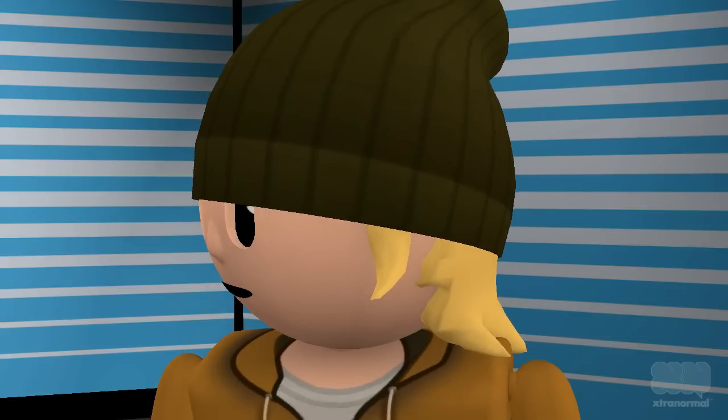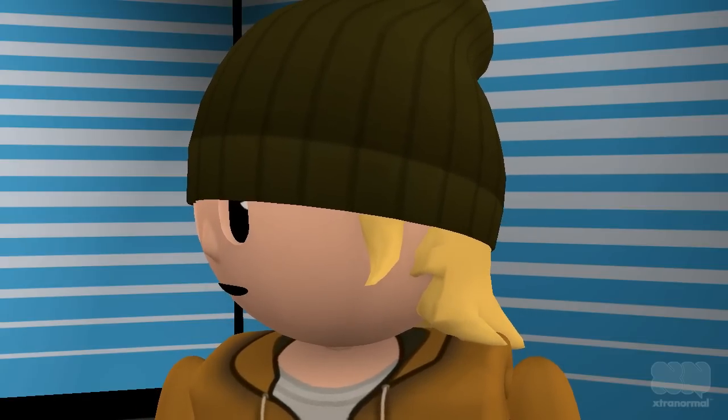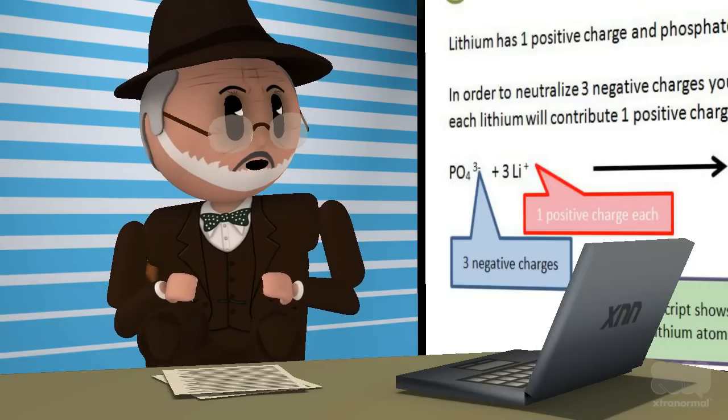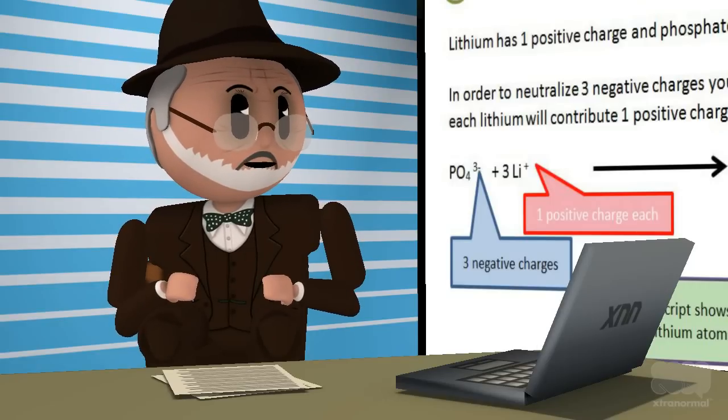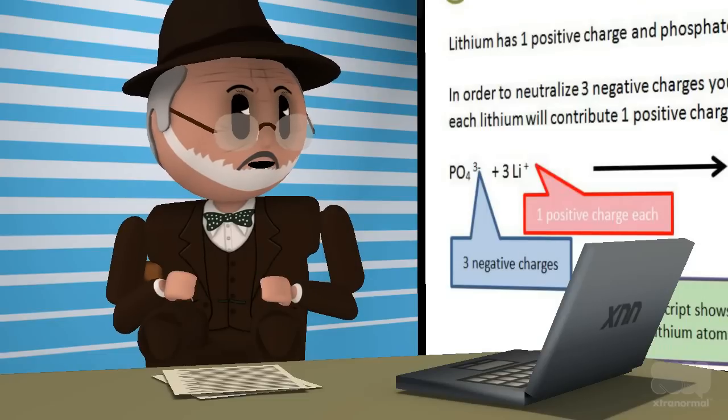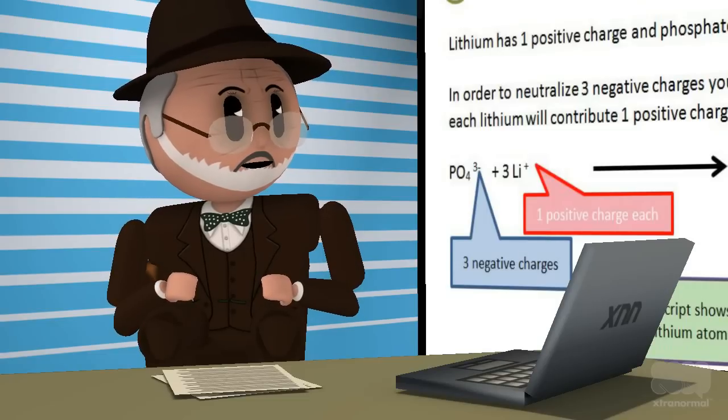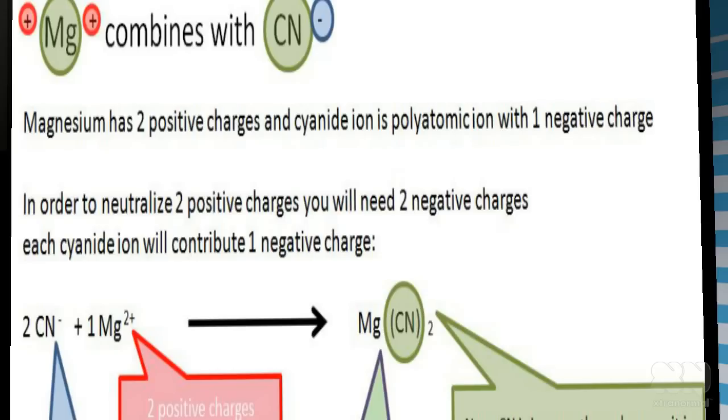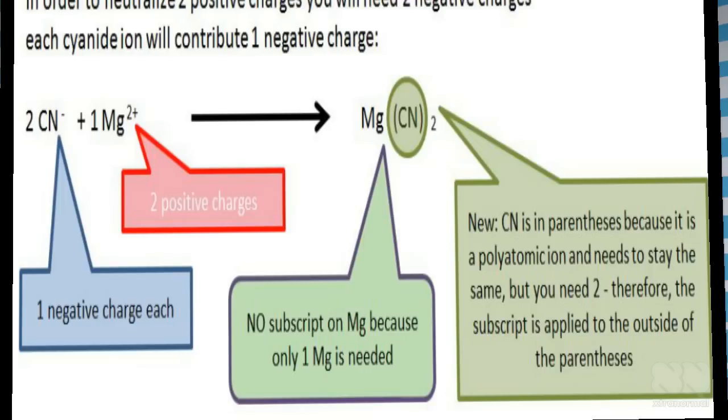What do I do when I have a positive ion that has more charges than the negative ion? Then you will need to combine them in a different ratio. Say you have a magnesium ion with two positive charges, and you want to combine that with a cyanide ion that has one negative charge. This time there is something special about the polyatomic ion. You need two of them to create a neutral compound. Any time you have a polyatomic ion and you need more than one, you need to place the polyatomic ion inside parentheses and apply the subscript to the outside of the parentheses.